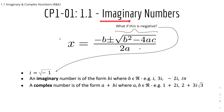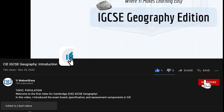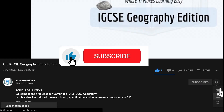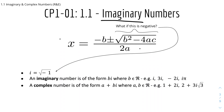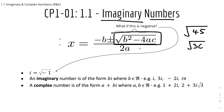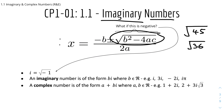We'll start off with Imaginary Numbers. So here we have the quadratic formula, which we use to solve for roots in quadratic equations. This square root is always the square root of a positive number — let's say root 45 or root 36. But here's a question: what if this is the square root of a negative number? This is where an imaginary number comes into play.